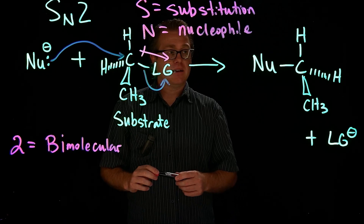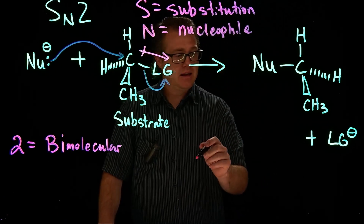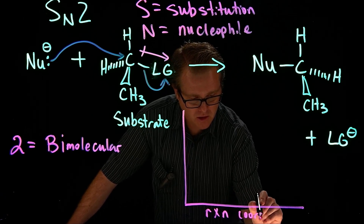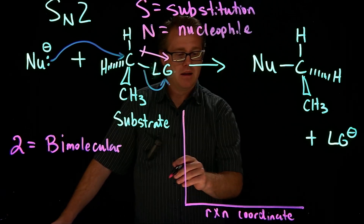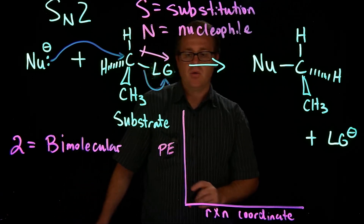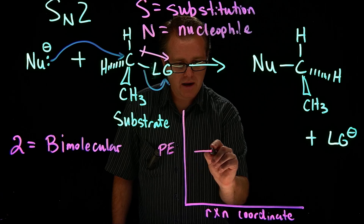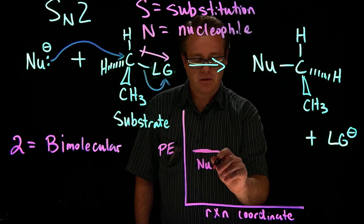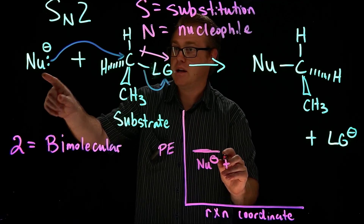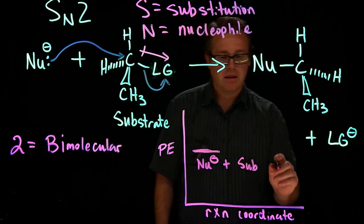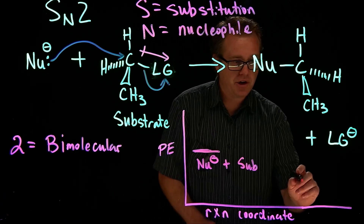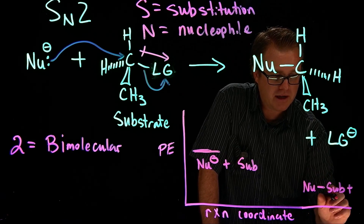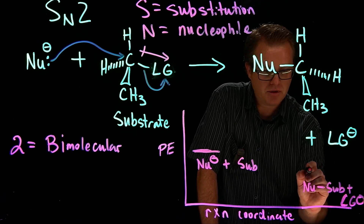When we take a look at the energetics, if we draw an energy coordinate system with reaction coordinate on the x-axis and potential energy on the y-axis: our starting energy level is our nucleophile — which is negatively charged — plus our substrate. That reacts and turns into our nucleophile bonded to our substrate, plus our leaving group with a negative charge. At the high point is our transition state.